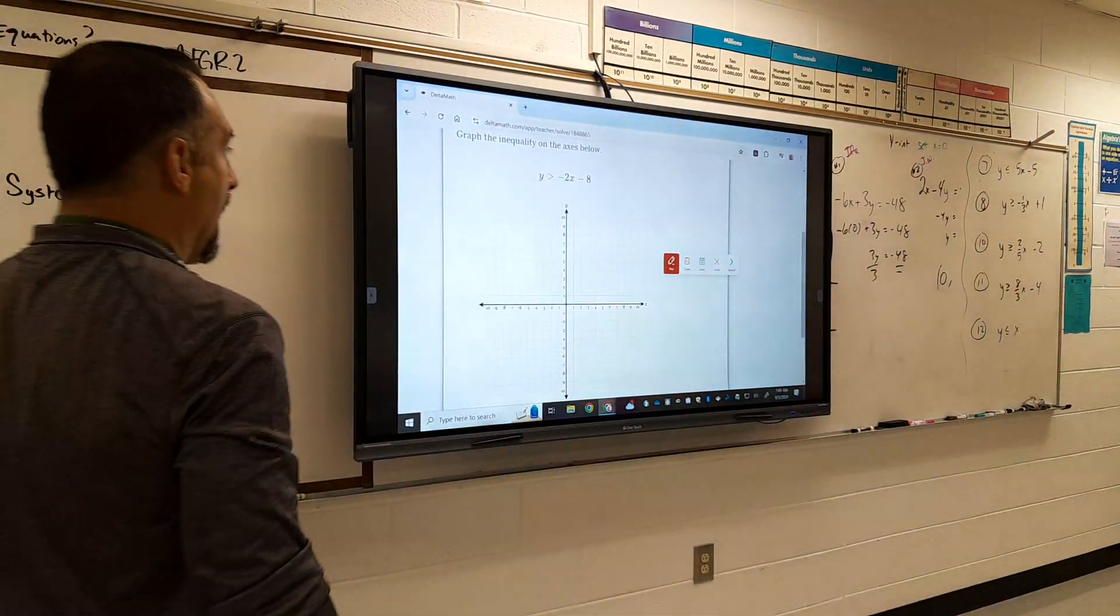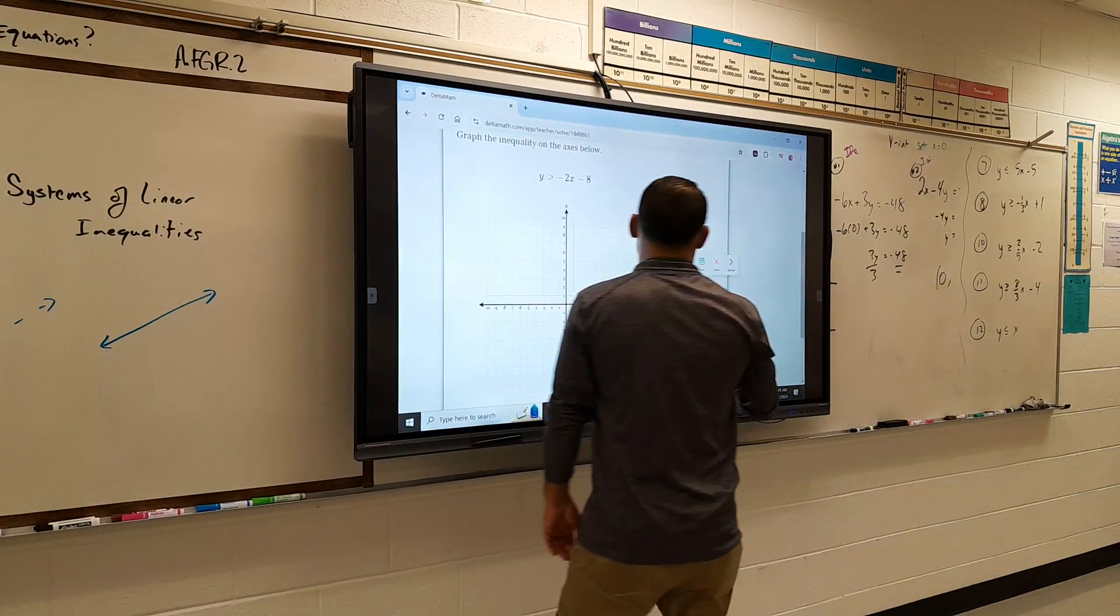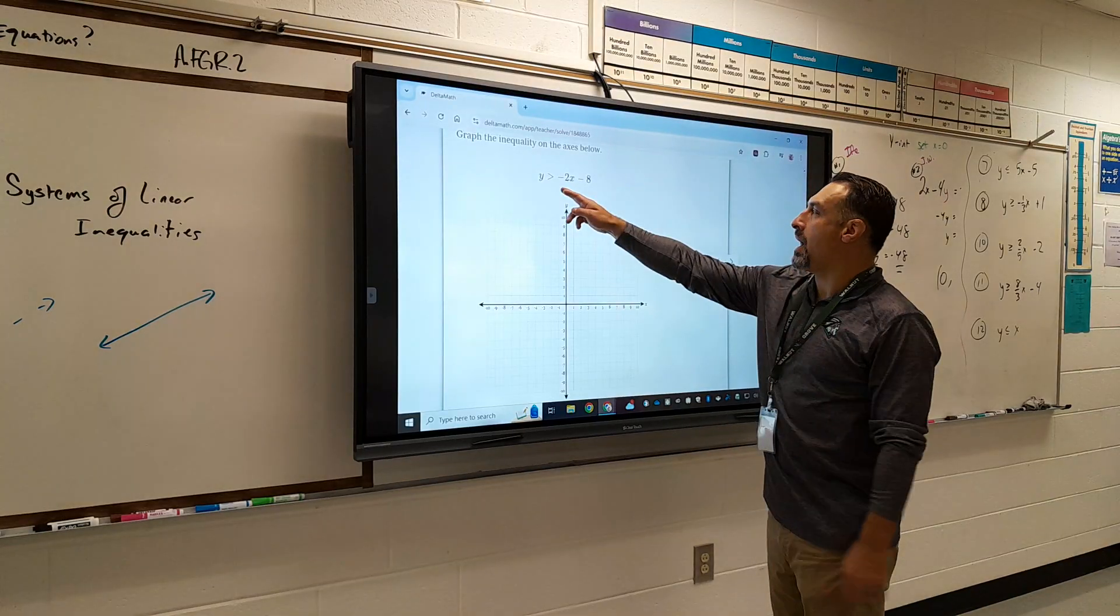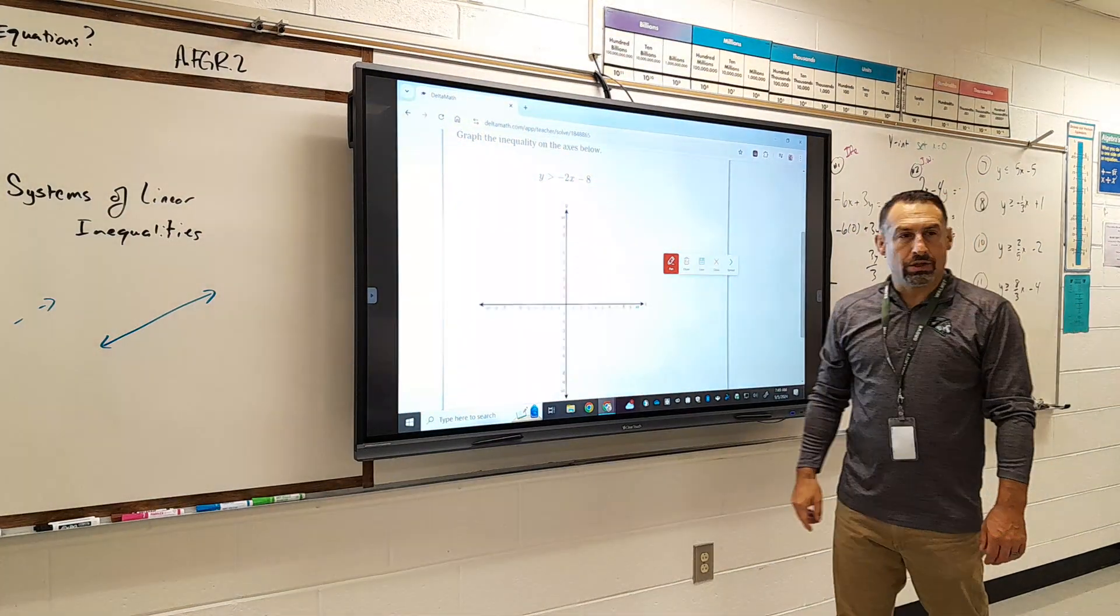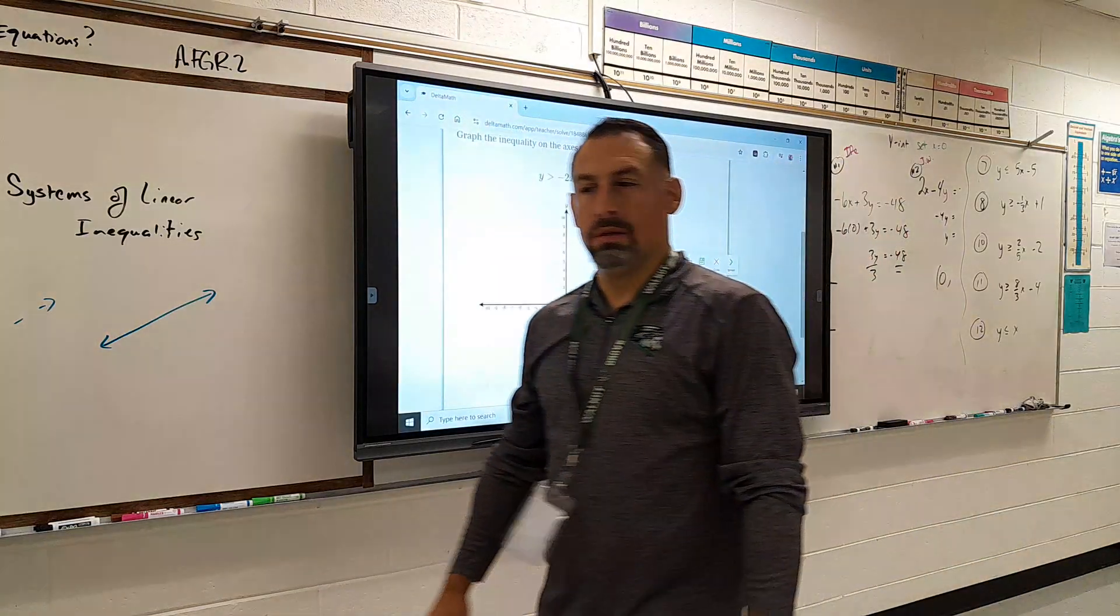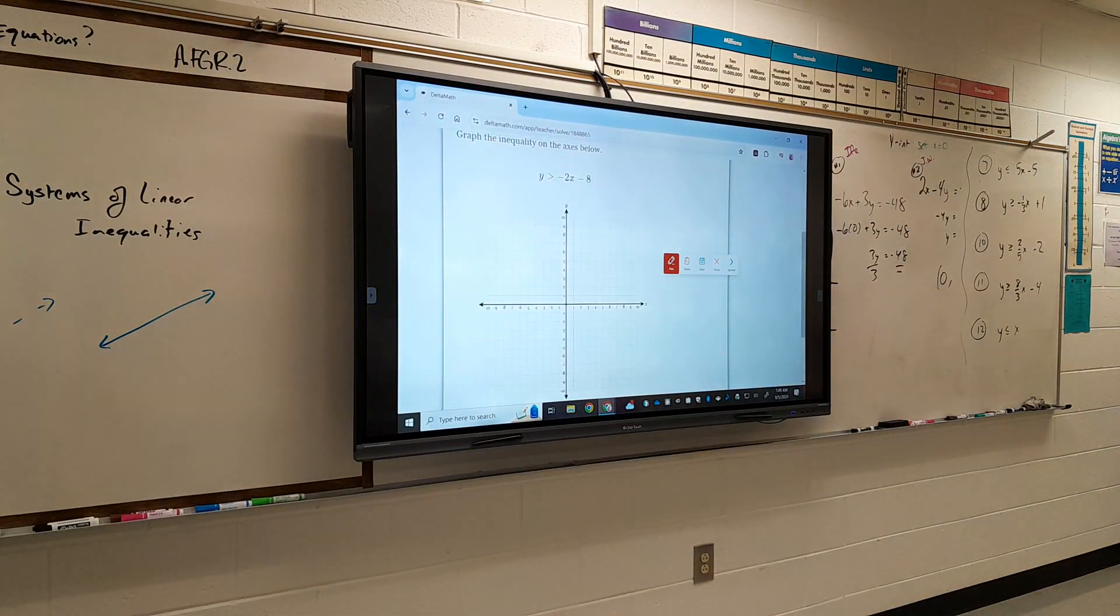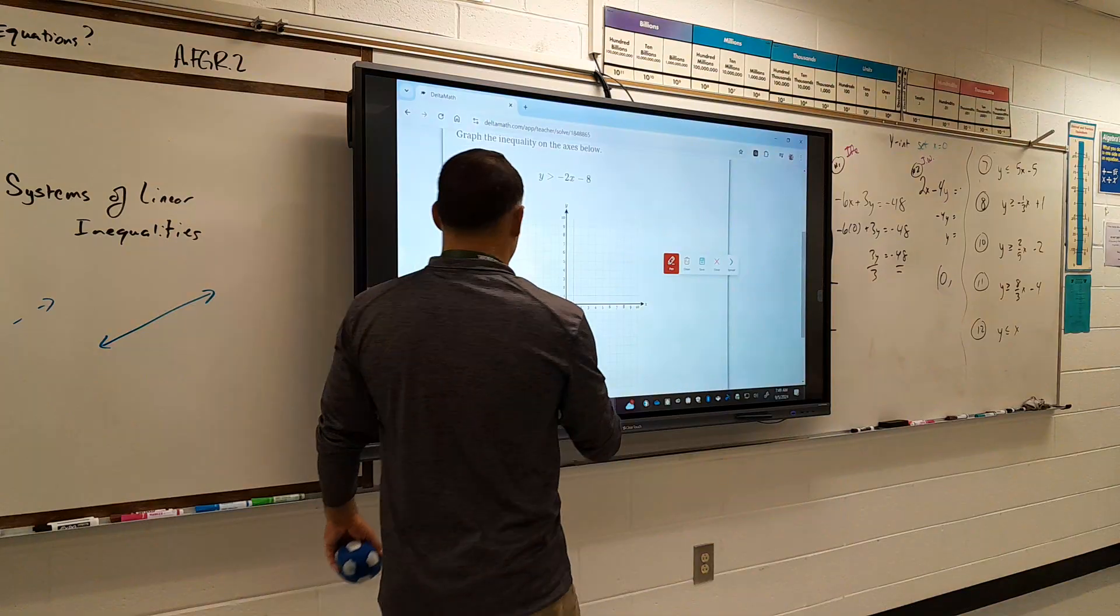All right, so today we are graphing inequalities, similar to what we did yesterday. Here we have y is greater than negative 2x minus 8. So where do we start? Negative 8. Negative 8. Down 8. So yes, we go right there, down 8.